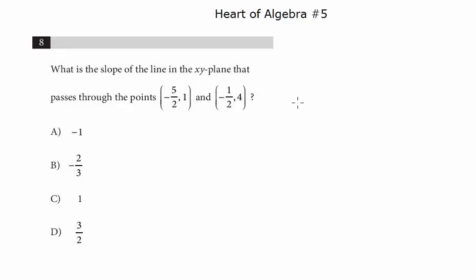So just to review, slope is the change in y over the change in x. And it doesn't matter which way you go, you just have to be consistent. So I'm going to start on this side, and the change in y is going to be 4 minus 1. The change in x is going to be -1/2 minus -5/2.